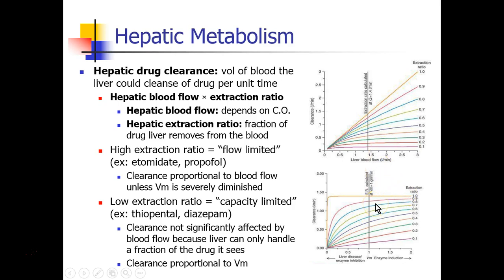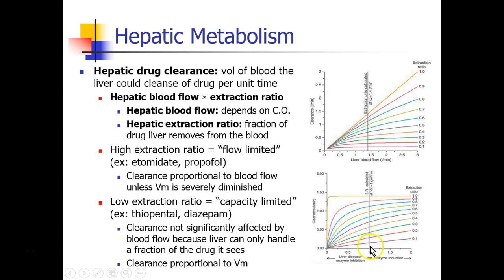Now if we think of the liver differently — instead of changing blood flow, let's think about a healthy liver versus a sick liver. Some people have enzyme induction, for example a person who drinks alcohol so regularly that they've induced the enzymes, making their liver more fit to metabolize alcohol quickly. Compared with someone who has liver disease or enzyme inhibition, whose liver is working poorly. So how does liver function affect clearance?